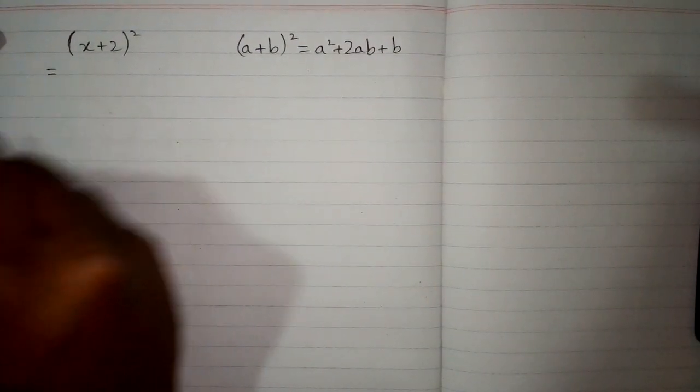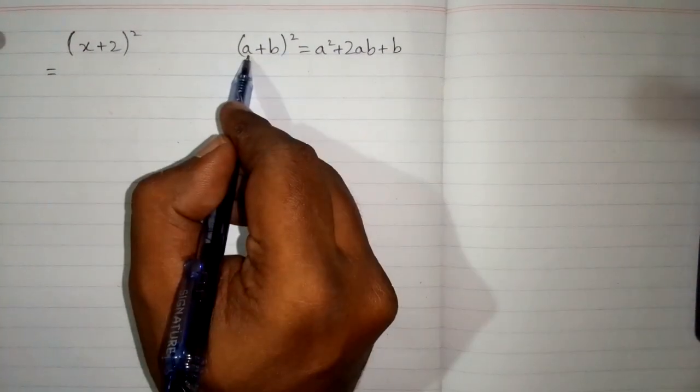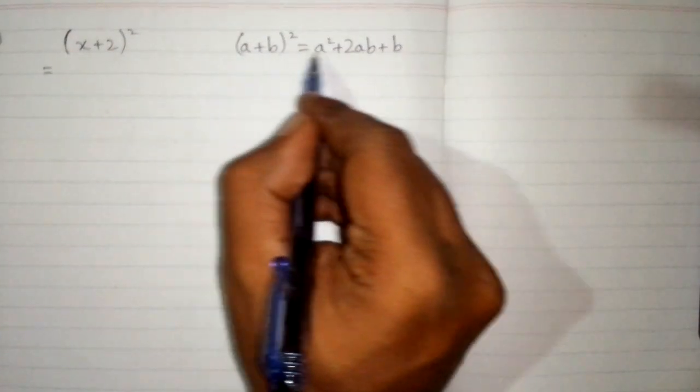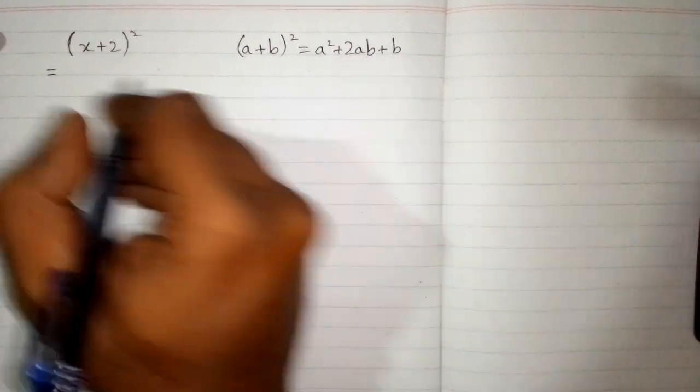So first of all, we can see that we have x in place of this a and 2 in place of this b. So we will write, first we will write the structure of this formula.